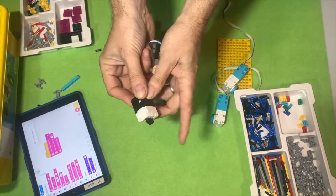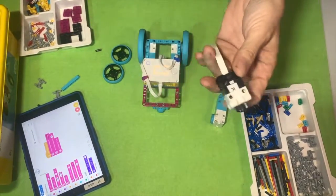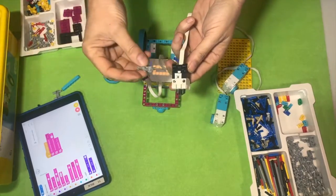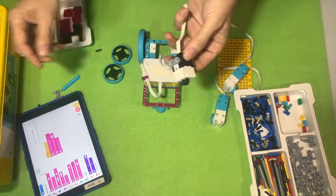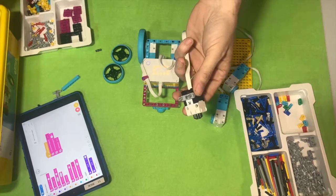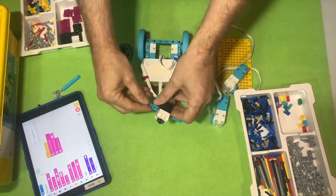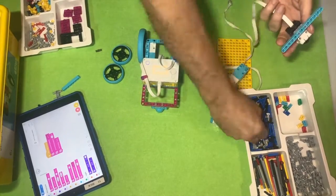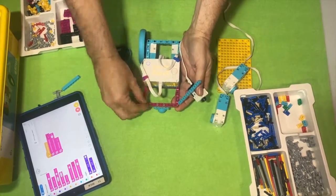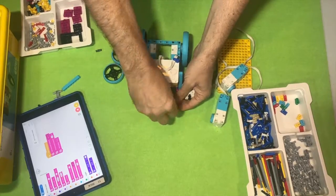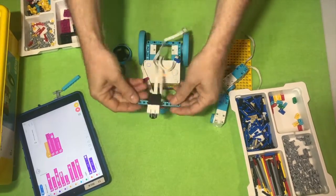So the first sensor we're looking at is the force sensor, or some people call it a touch sensor, and it's basically a button. We need to attach that to the robot somehow. Sometimes you need to attach bigger pieces to the smaller sensors so that they can go on your robot easier. So I've just attached it to a beam, and I'm going to use some little black pieces to attach that to the robot.